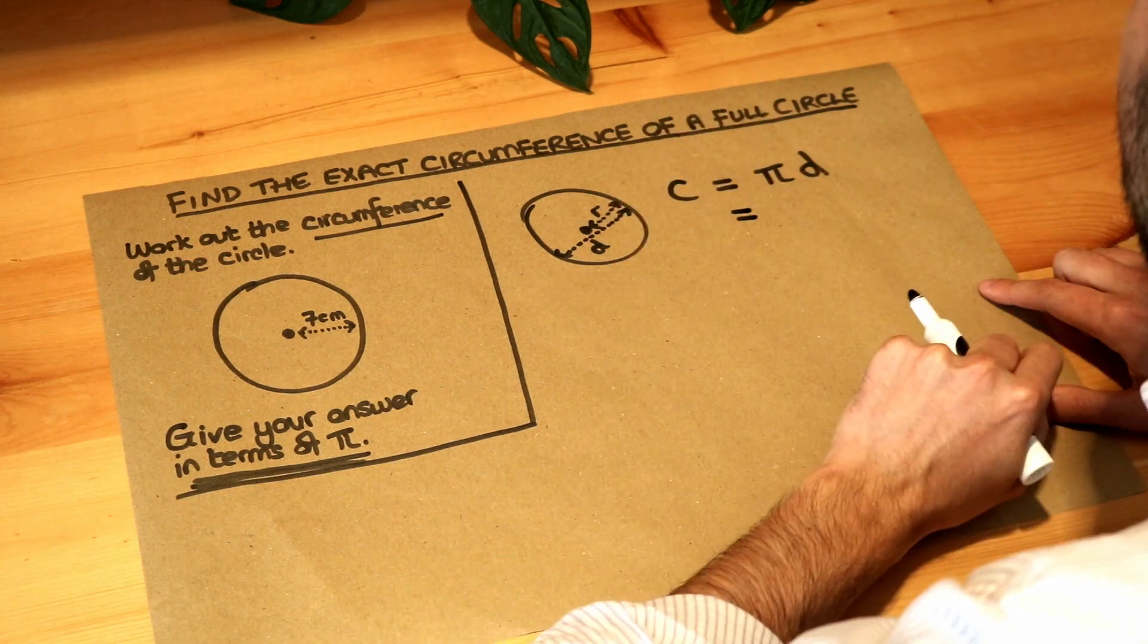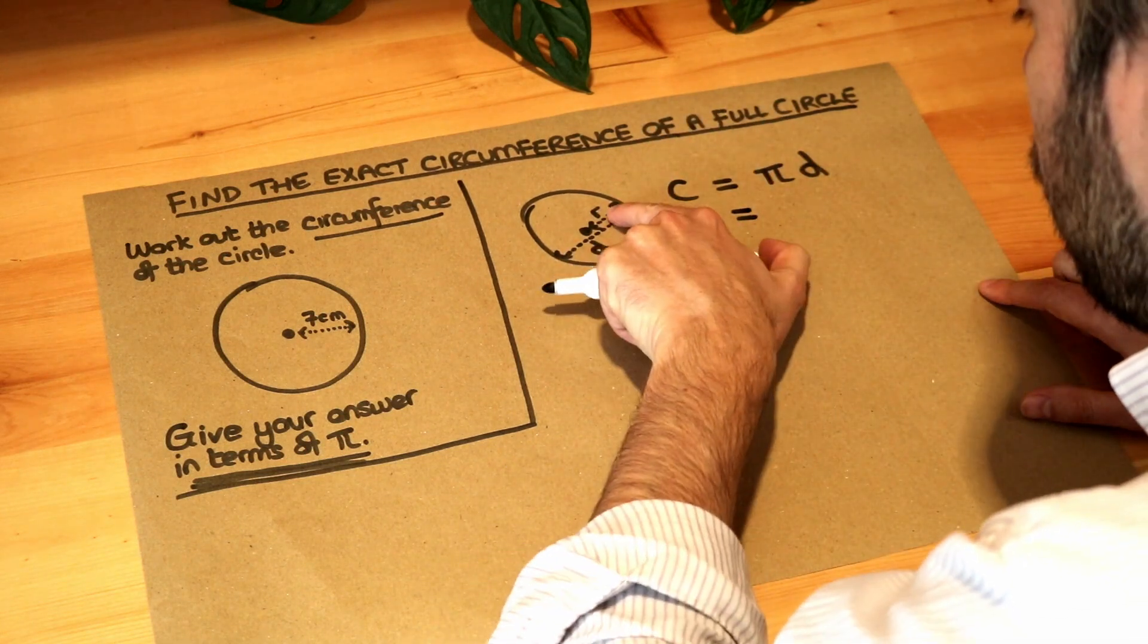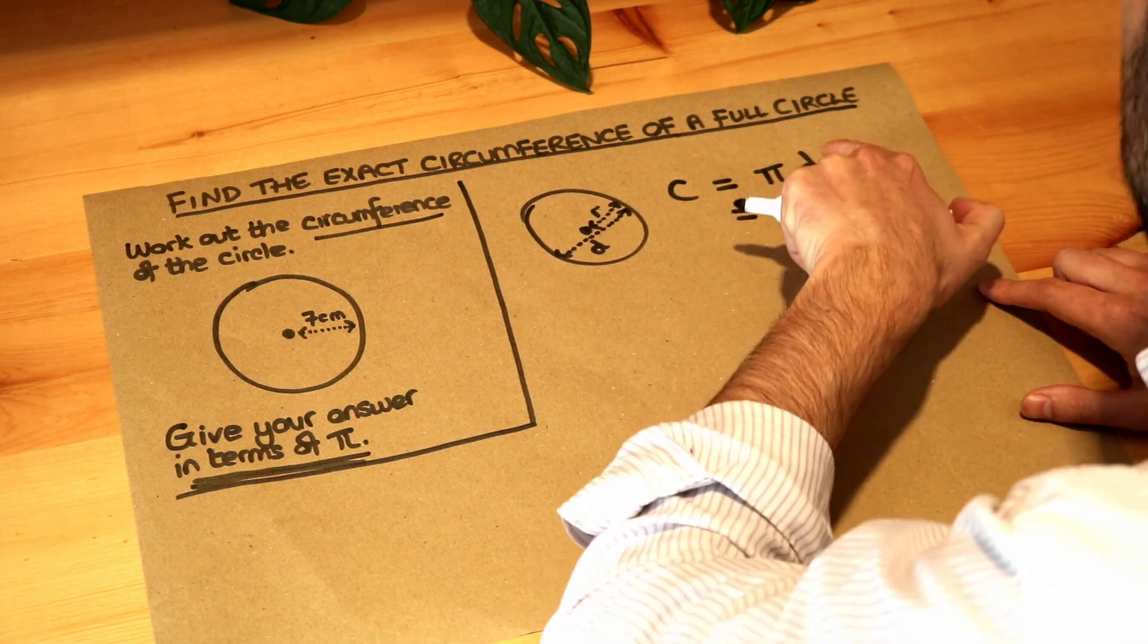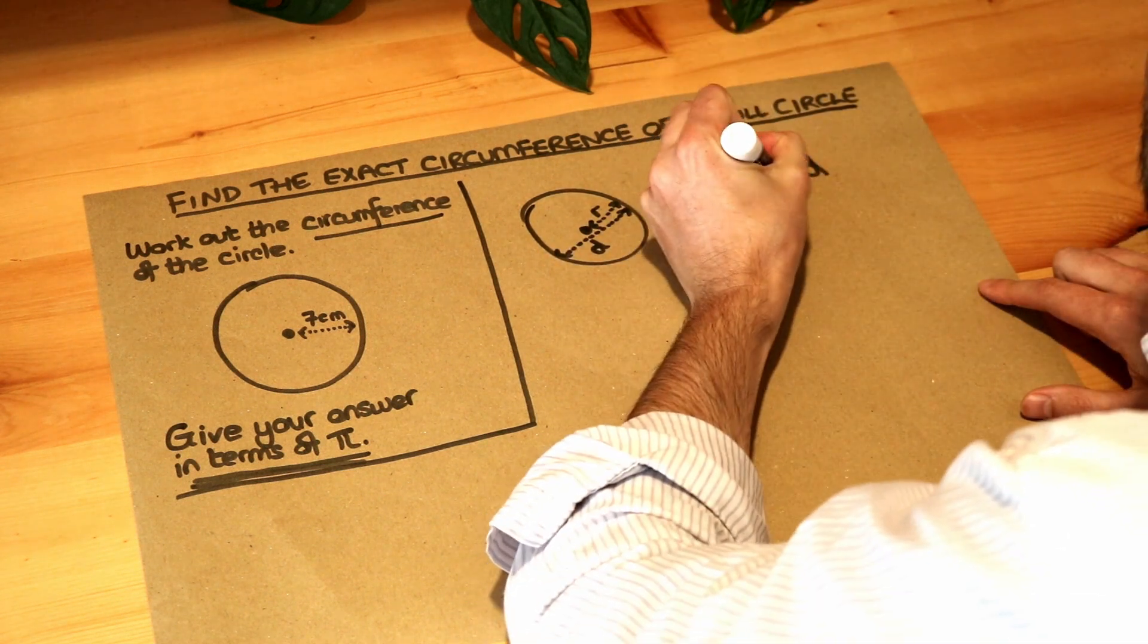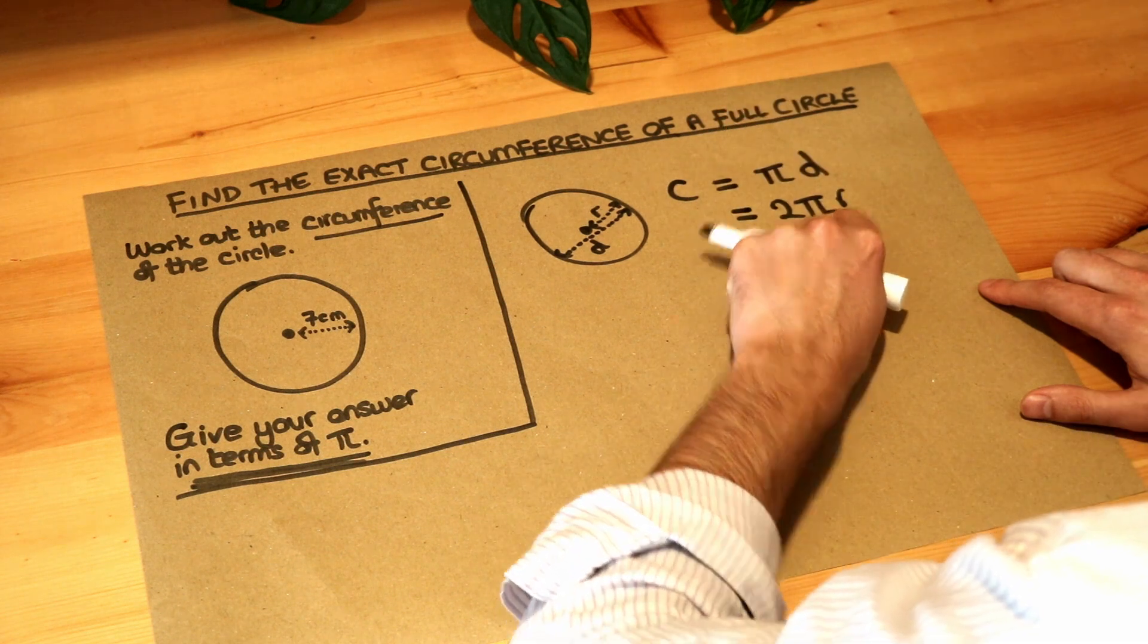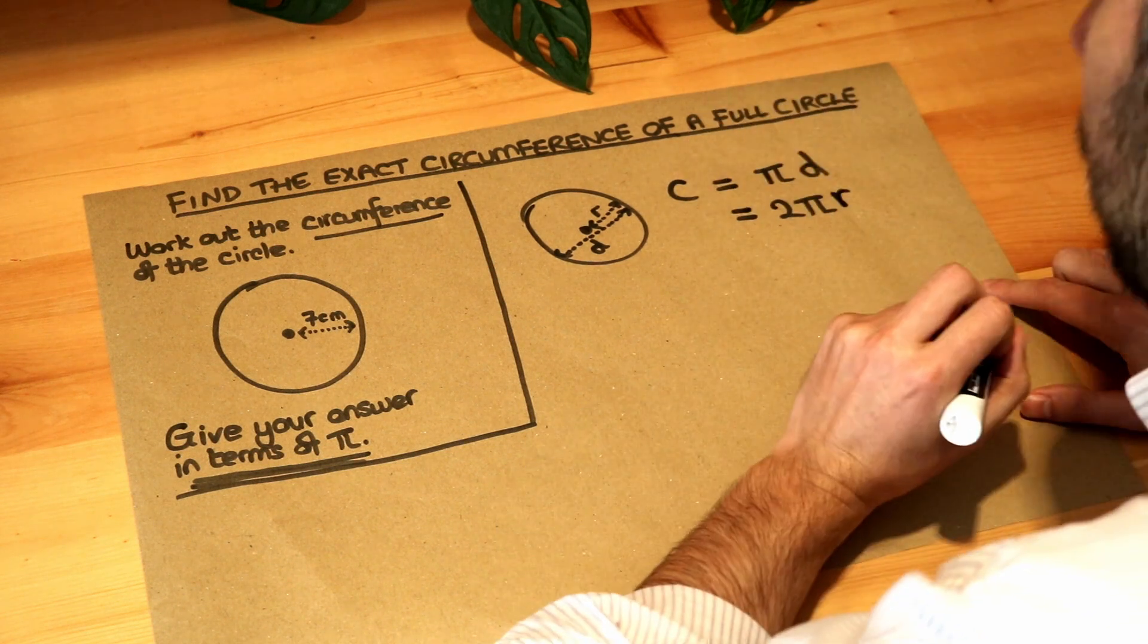Or if you want to use the radius instead, because the diameter is two lots of the radius, it's pi times two times the radius, which we could write as two pi r. So two times by pi multiplied by the radius.